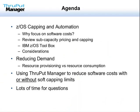For our agenda today, we want to start off by showing just how important software costs are in the data center. We'll review subcapacity pricing, the rolling four-hour average, and the soft capping options provided by IBM. Then we'll discuss reducing demand. Consider that capping controls resource provisioning, but subcapacity pricing is based on resource consumption. To really reduce software costs, you need to reduce consumption. Throughput Manager does this automatically with or without capping.